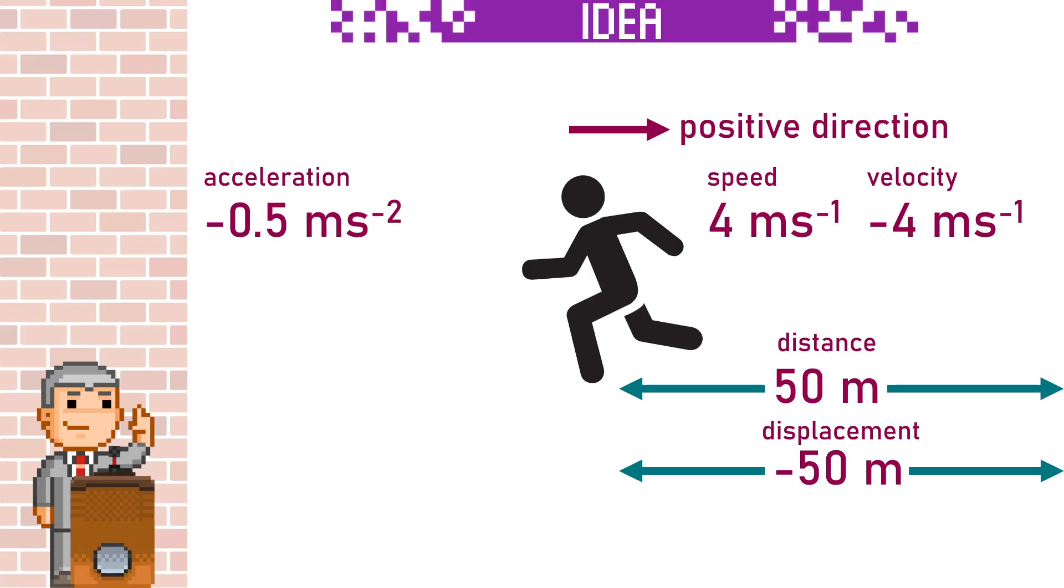When you remove the direction from the vectors, displacement and velocity, they will become the scalars distance and speed.